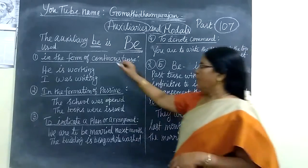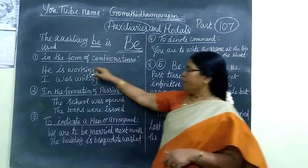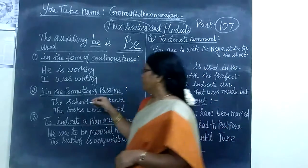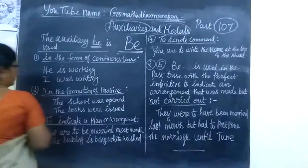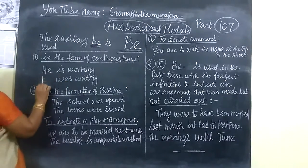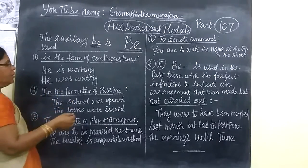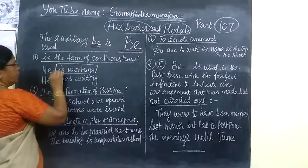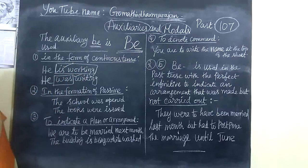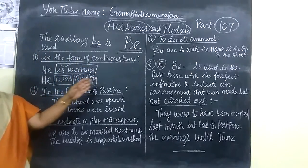In auxiliary verbs, the be-form is used at the end in the continuous tense. In the continuous form, we use the be-form. You can see the first example: 'He is working.' And 'He was writing the letter.' Also, 'I am writing the letter.' The be-form is used in the continuous form.